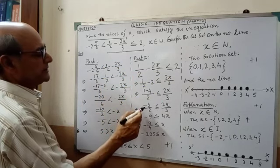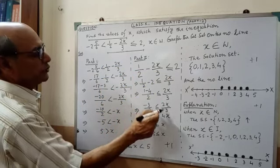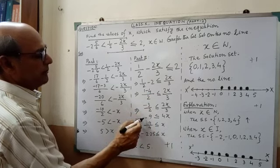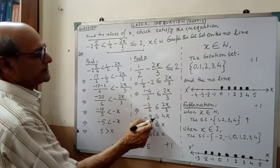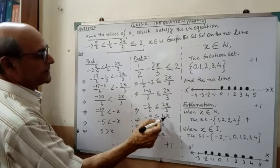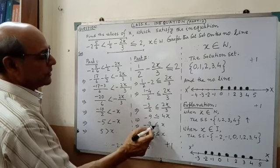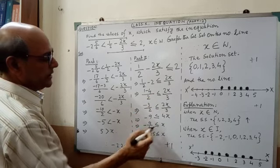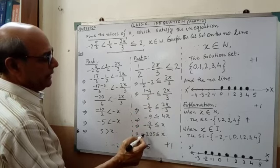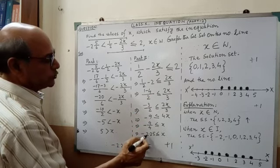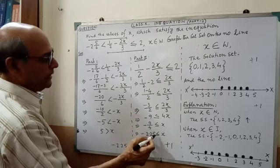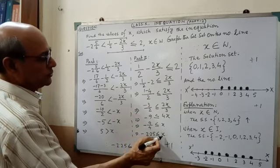Minus 3 by 2, less than equal to 2x by 3. Minus 9, less than equal to 4x. Minus 9 by 4, less than equal to x. And minus 2.25, less than equal to x.